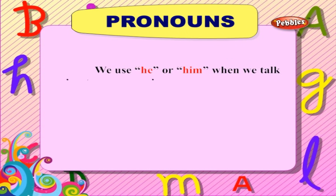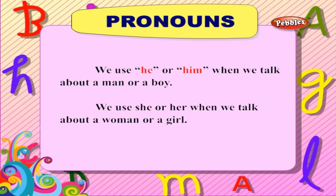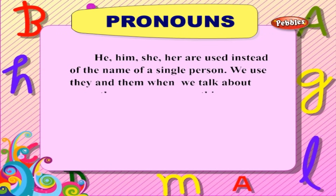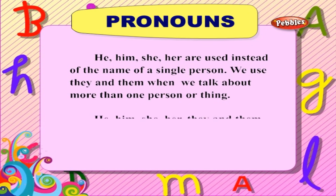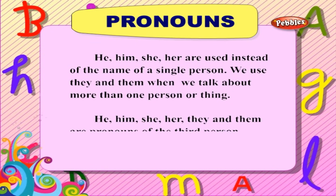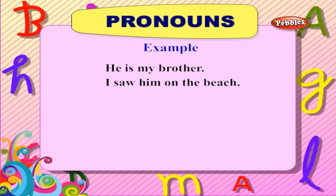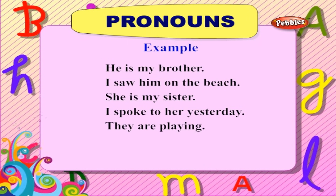We use 'he' or 'him' when we talk about a man or a boy. We use 'she' or 'her' when we talk about a woman or a girl. 'He', 'him', 'she', 'her' are used instead of the name of a single person. We use 'they' and 'them' when we talk about more than one person or thing. 'He', 'him', 'she', 'her', 'they', and 'them' are pronouns of the third person. For example: 'He is my brother. I saw him on the beach. She is my sister. I spoke to her yesterday. They are playing. Did you call them?'